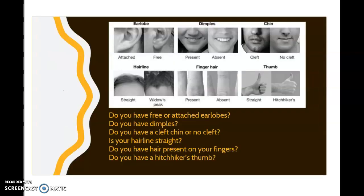Let's take an inventory of the variations of traits that you have. Do you have free or attached earlobes? You might have to go to a mirror and look — do your earlobes look like these here, or are they free? Can they wobble back and forth, or are they completely attached all the way down to the end? Do you have dimples when you smile, or are they absent? Do you have a cleft in your chin or no cleft?